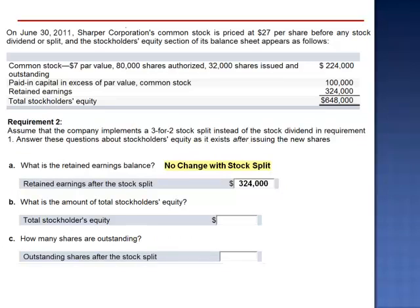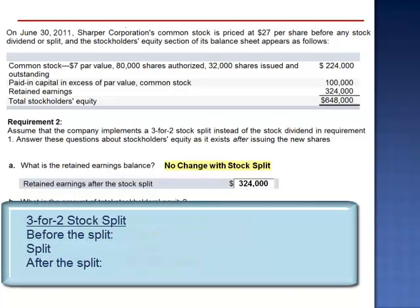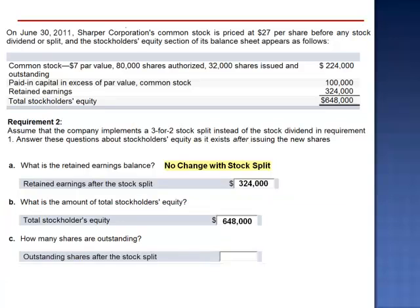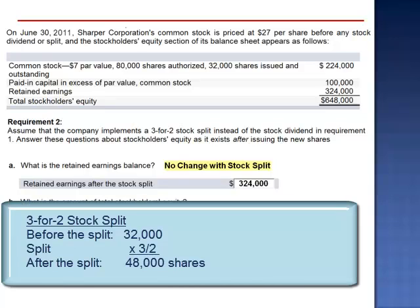Since neither a stock dividend nor a stock split changes the net assets of the corporation, neither will change the amount of total stockholder's equity. How many shares are outstanding after the split? For every two shares previously outstanding, there will now be three. So if we take 32,000 shares, divide by 2, that's 16,000, and then multiply by 3, we'll have 48,000 shares outstanding after the stock split.